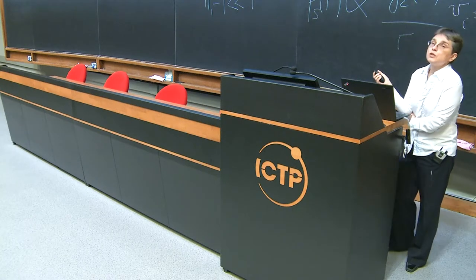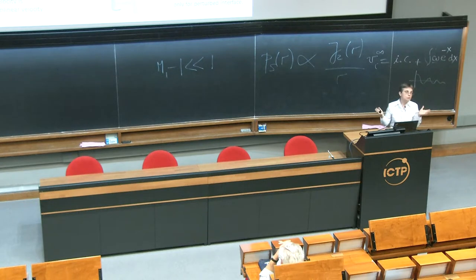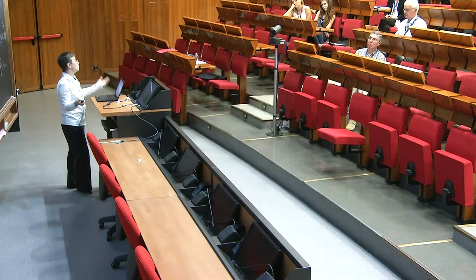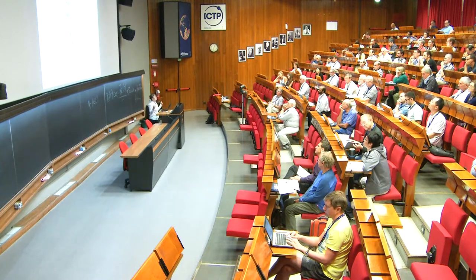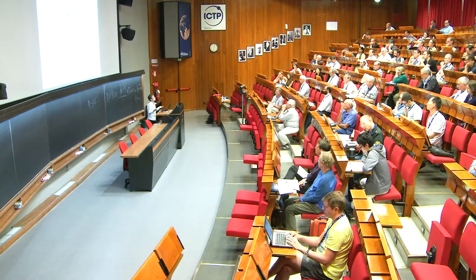When the shock goes from light to heavy, the largest velocity is the shock velocity. The background motion velocity — with which both fluids and interface move after shock passage — is roughly 10% of the shock velocity: one order of magnitude down. The initial growth rate is roughly 10% of the background velocity — two orders of magnitude down from shock velocity. To quantify nonlinear dynamics accurately requires another factor of 10, giving 10^-3 of shock velocity. Proceeding to the mixing regime requires yet another order of magnitude — 10^-4 of shock velocity. So we must track and accurately measure across a scale range of 1 to 10^-4.